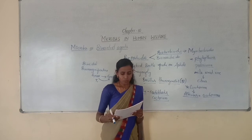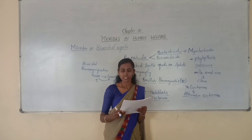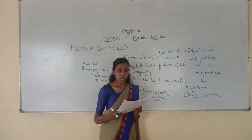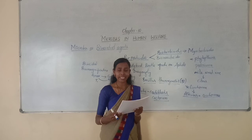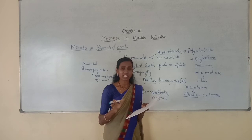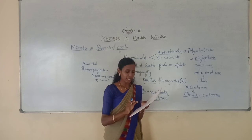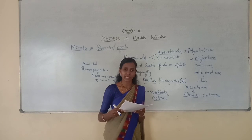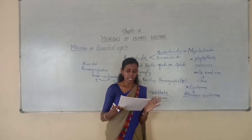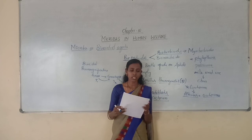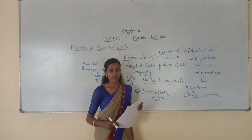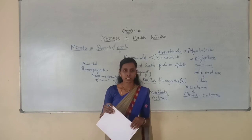Next question: Which one of the following is not a bacterial herbicide? Option A: Pseudomonas species, Option B: Xanthomonas species, Option C: Phytolum species, Option D: Agrobacterium species. Options A, B, and D are bacterial species. Option C, Phytolum species, is actually a fungal species, not a bacterial herbicide. So Option C is not a bacterial herbicide. In the next class we will discuss bio insecticides as well as a new concept.